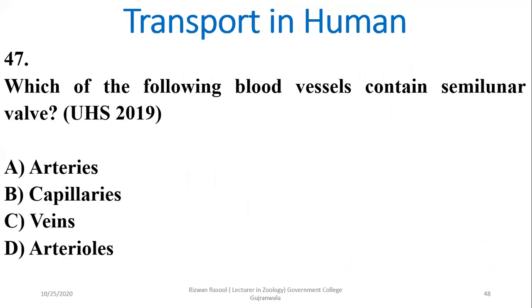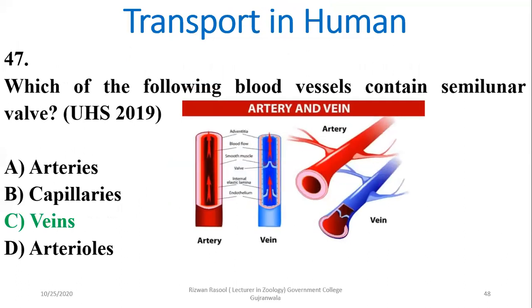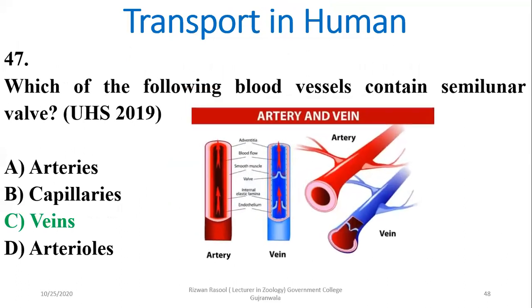Question 47: Which of the following blood vessels contains semilunar valves? Semilunar valves are found in veins to prevent backward flow of blood.